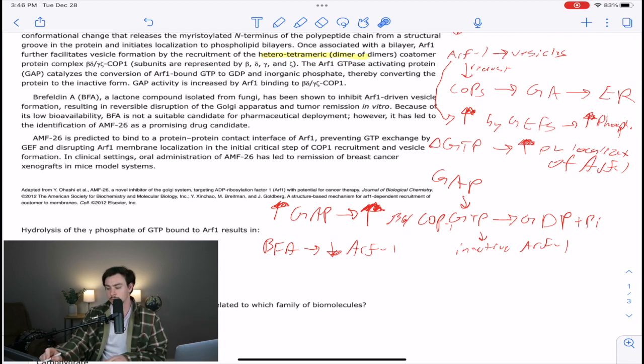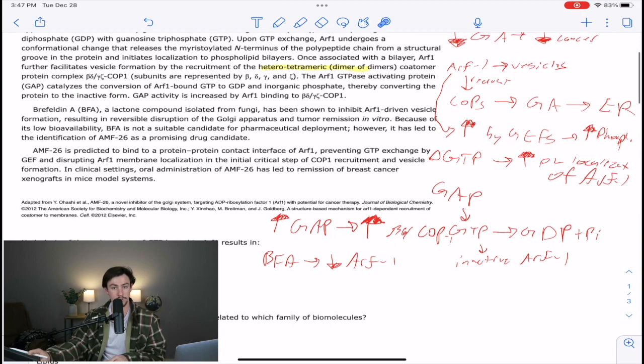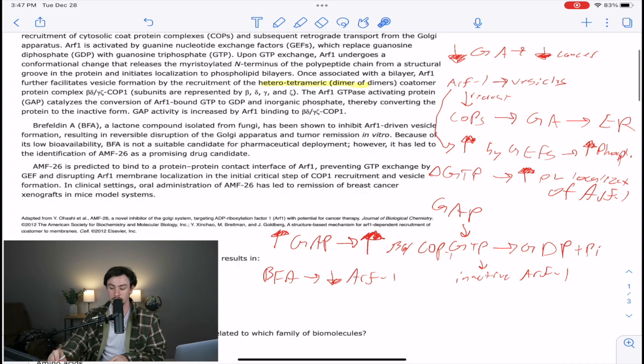AMF26 is predicted to bind to the protein-protein contact interface of ARF1, preventing GTP exchange by GEF, and disrupting ARF1 membrane localization in the critical step of COP1 recruitment and vesicle formation. That's a ton of relationships in there, but you don't have to write them down because you've already got all of those. This paragraph should have made sense to you if you followed along with the relationships.